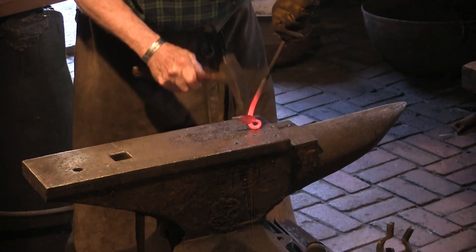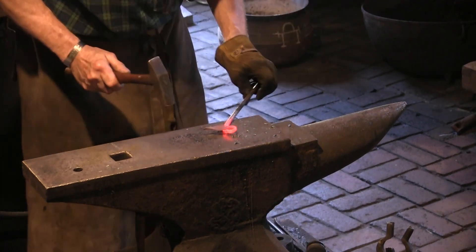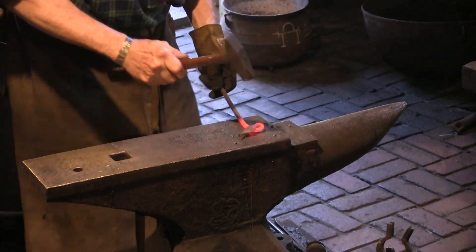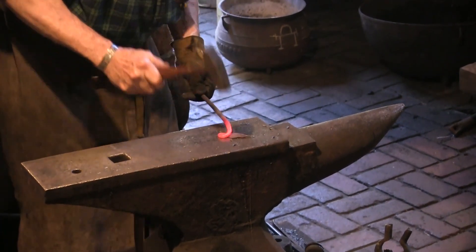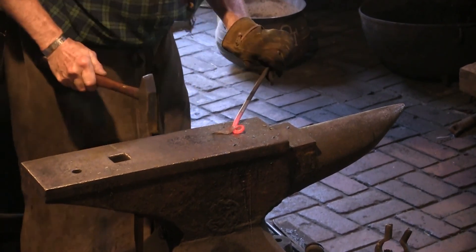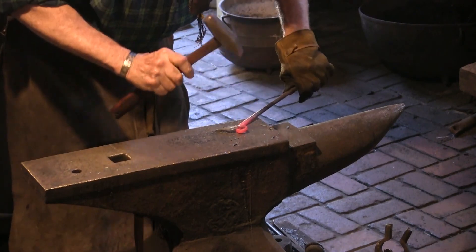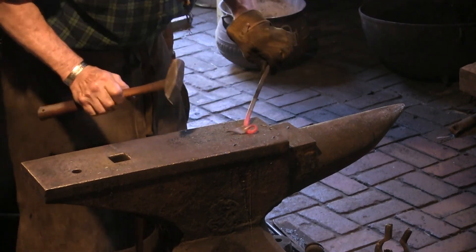Rust usually forms slowly, but because there is so much energy in the heated rod, this reaction happens much faster. As the scale forms on the surface and falls away as the blacksmith bends and forms the rod, new rust occurs almost immediately.